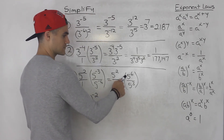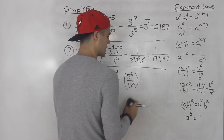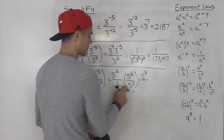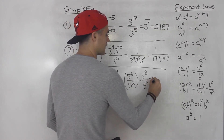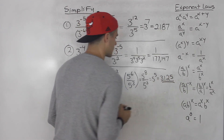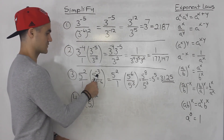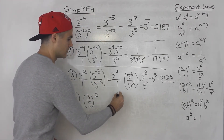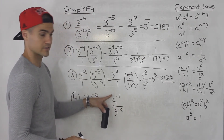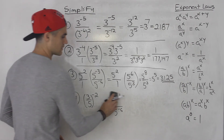Going with the first approach: 5 squared times 5 to the 6 gives 5 to the 8, over 5 to the 3. That leaves 5 to the power of 5, which equals 3,125. Alternatively, 5 squared times 5 to the negative 3 gives 5 to the negative 1 over 5 to the negative 6; bringing the negative 6 up and negative 1 down, subtracting 6 minus 1 gives 5 — same answer.